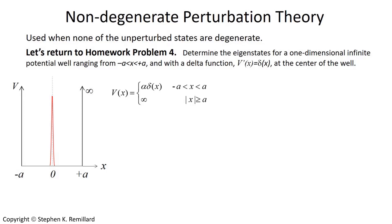I'm going to cover this by example by beginning with what we did in homework number 4, and for listeners who didn't see that, I'll review it briefly. We had a bound state problem, an infinite potential well, and just to make everybody's lives difficult, it was centered at the origin.